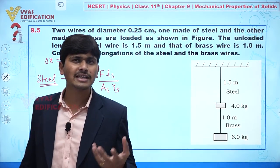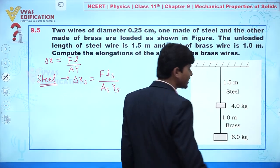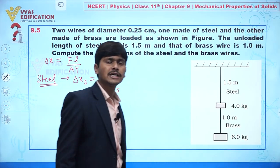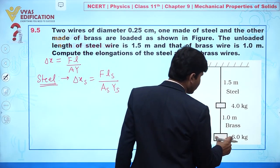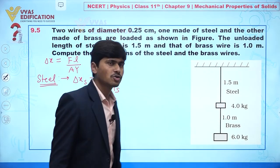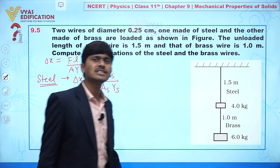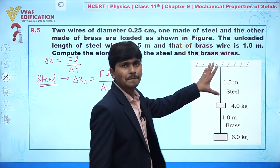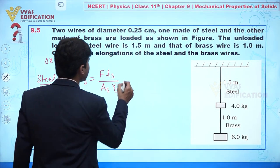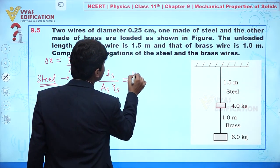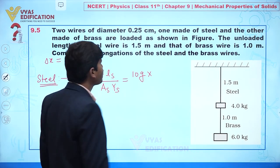For the steel wire, what is the external loading taking place? We have 4 kg, and neglecting the mass of the brass wire, we also have 6 kg. So the total weight hanging on this steel wire is 4 plus 6 equals 10 kg. We write this as 10 times g.